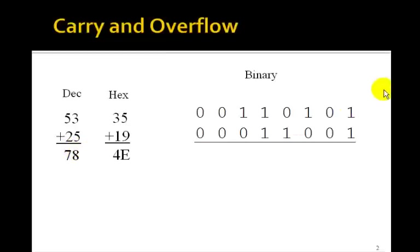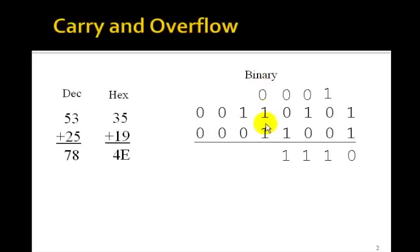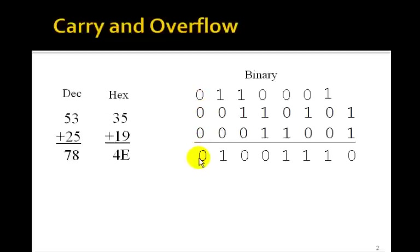Let's do this binary addition. 1 plus 1 is 0 with a carry; 1 plus 0 plus 0 is 1 with a carry; then 1 with no carry; 0 plus 0 plus 1 is 1 with no carry; 1 plus 1 is 0 with a carry; 1 plus 1 is 0 with a carry; 1 plus 0 plus 0 is 1 with no carry. Note there's no carry from bit 6 to bit 7. Then 0 plus 0 is 0 with no carry out — the carry bit out is 0, because 78 is less than 255. This is the correct unsigned answer — 4E, just as expected.